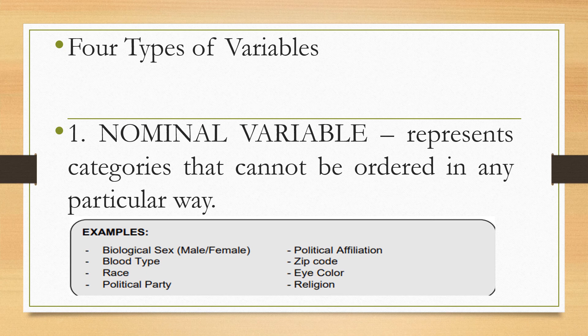We have four types of variable. The first one is nominal variable. It represents categories that cannot be ordered in any particular way — there is no ordering of cases. Either it has two or more categories, but it does not imply ordering. Examples include biological sex (male and female), blood type, race, political party, political appellation, zip code, eye color, and religion.